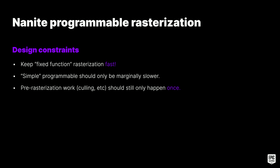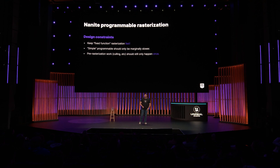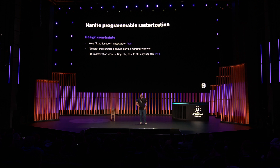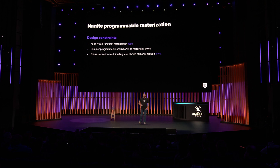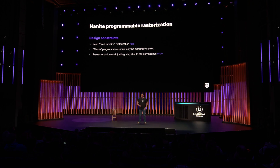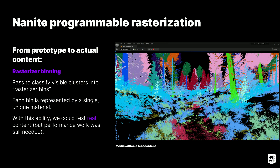We implemented the new system with a couple of constraints: keep the original rasterization path fast so the new feature would not slow down existing content; basic programmable rasterization should only be marginally slower than the fixed-function version; and we wanted to perform instance and cluster culling work only once for simplicity and speed. The initial prototype was hard-coded to support only a single programmable material, so the next step was to add a proper rasterizer binning pass to support actual game scenes composed of hundreds of materials. This enabled us to test actual content, though we knew we still had room for improvement on performance. You can see our test project 'Medieval Game' in a debug view showing a unique color per rasterization material.